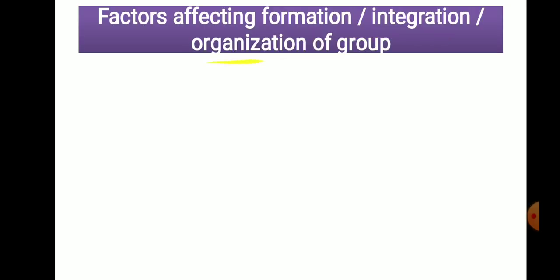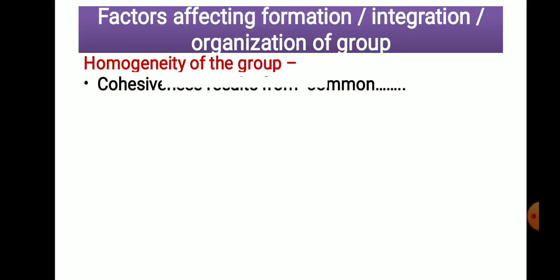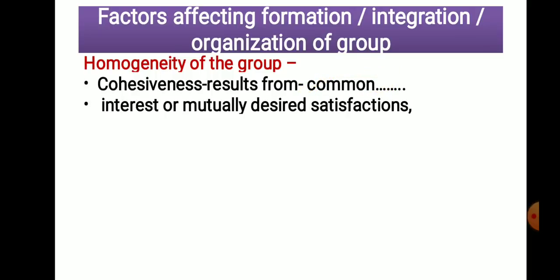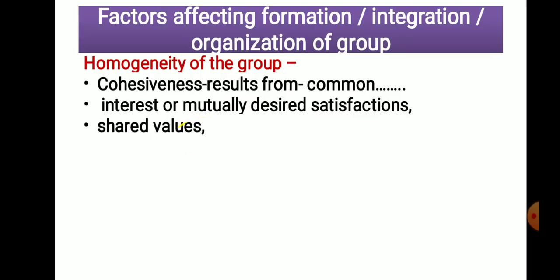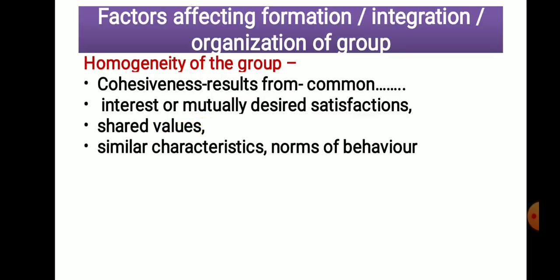These are the classifications of groups. Next, we discuss factors affecting the formation or integration of groups. The first factor is homogeneity — the similarity present among members. Cohesiveness or unity in a group results from commonness and similarities. More similarity means more homogeneity. The commonness required is regarding interest and mutually desired satisfaction — the interest of each member should be the same, and the values of each person should also be the same.